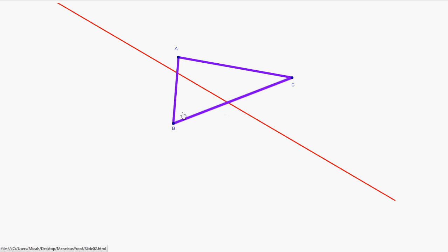This video is going to be about Menelaus' Theorem, which is a theorem that describes what happens when a line, such as this red one, intersects the three sides of a triangle.